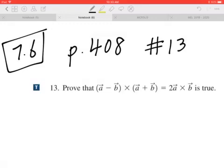Prove that vector a minus vector b in brackets cross vector a plus vector b in brackets equals two times vector a cross vector b is true.